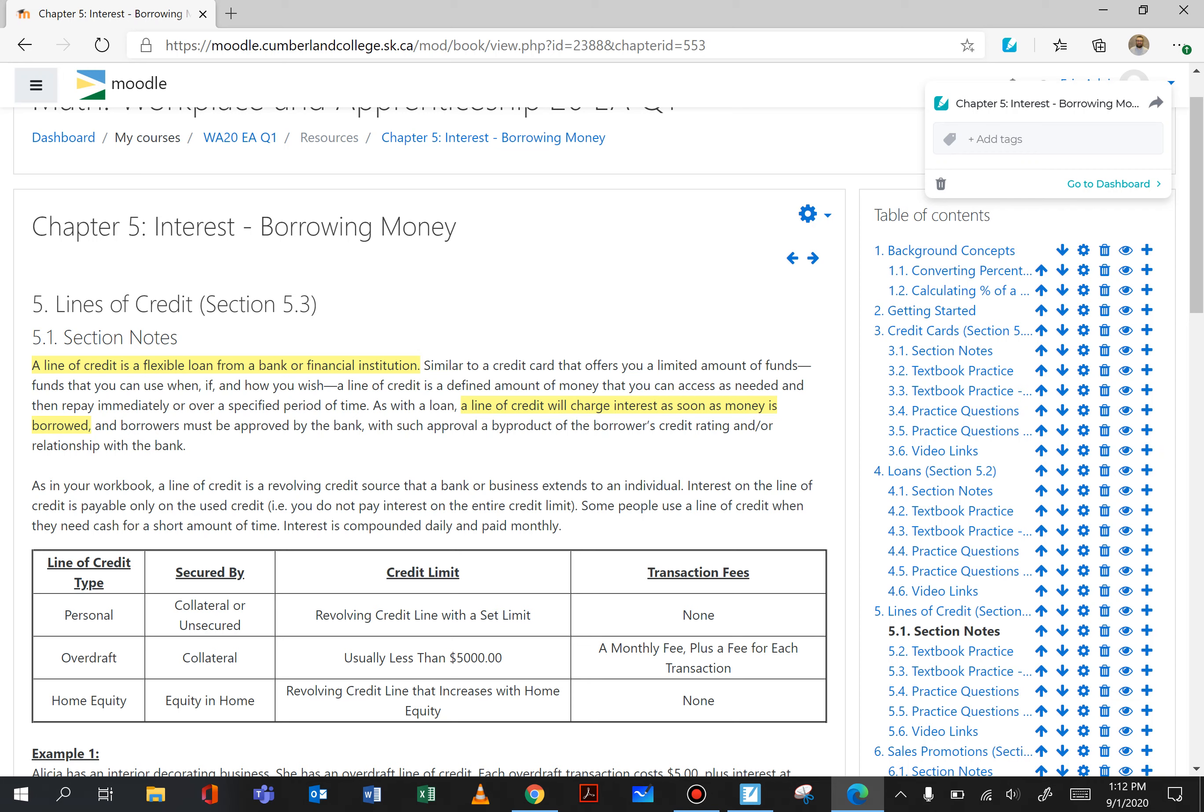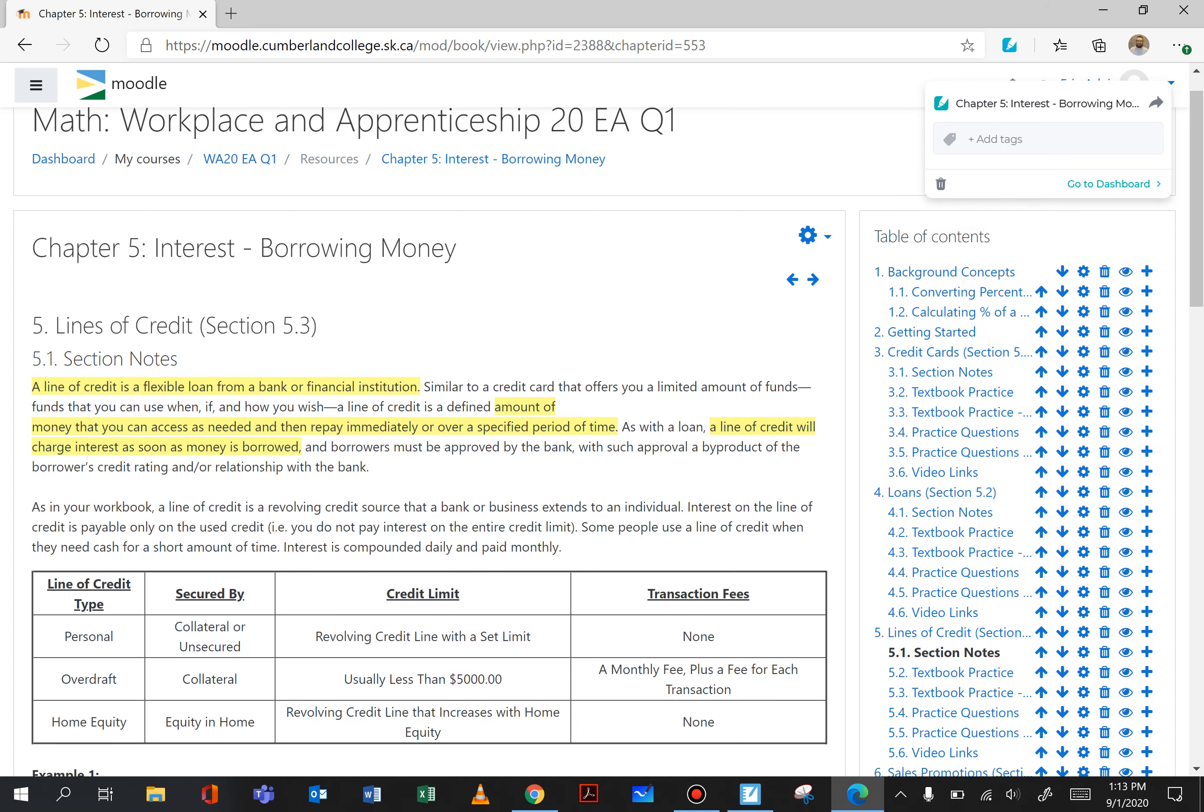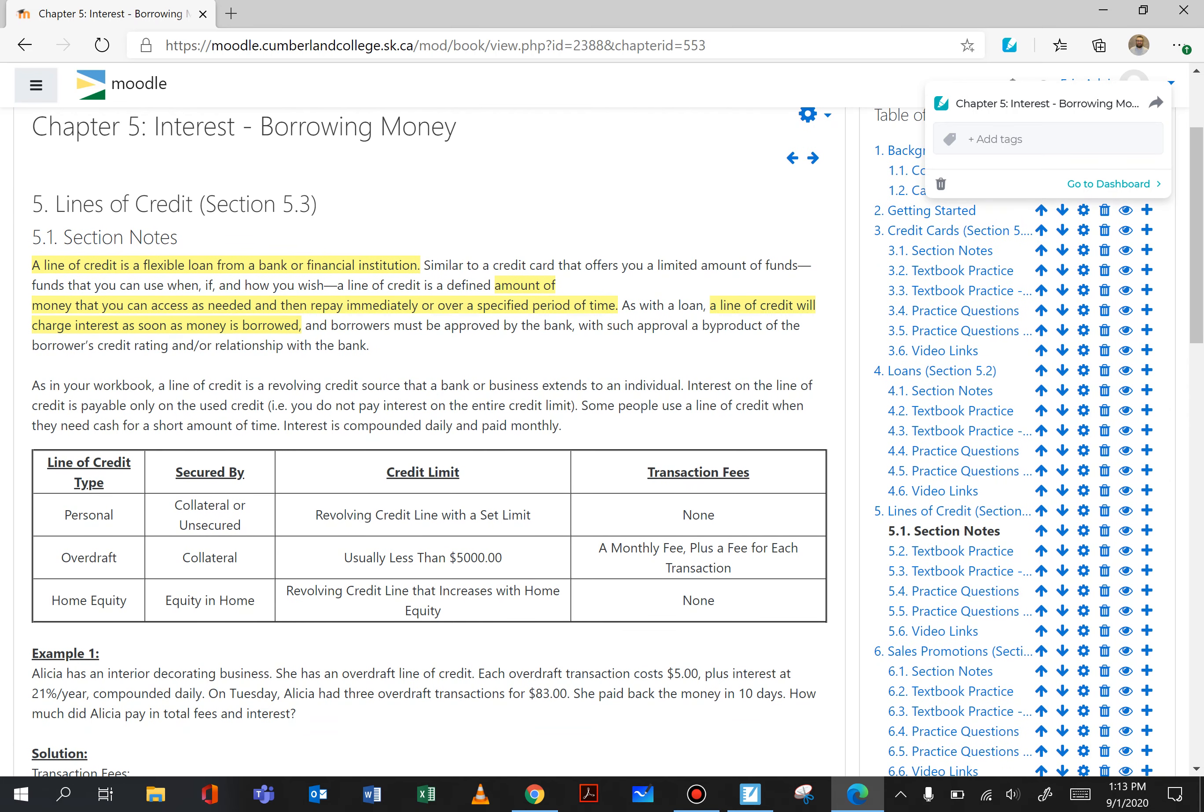So this line of credit is an amount of money that you can access as needed and then repay immediately or over a specified amount of time. You don't necessarily have to pay it back all at once as well. You can pay it back slowly. Now the longer it takes you to pay it back the more interest you are going to be charged because it's going to take you longer and you're owing that money.